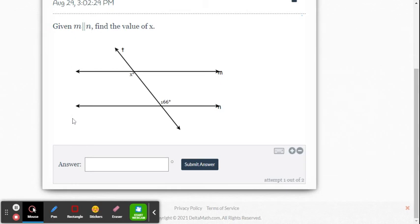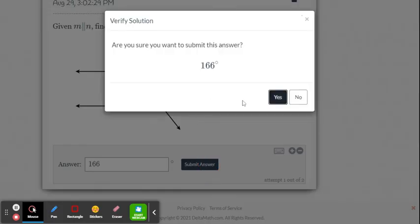Here's our next example. This time they set us up right away. We are given alternate interior angles and we know that alternate interior angles are congruent when the lines are parallel. So that means they have the same measure. So this is a quick one. 166. Submit the answer.